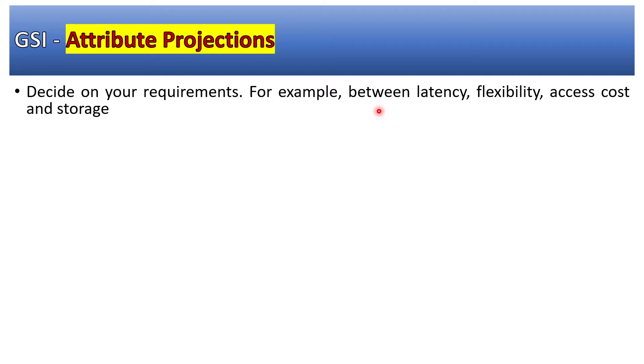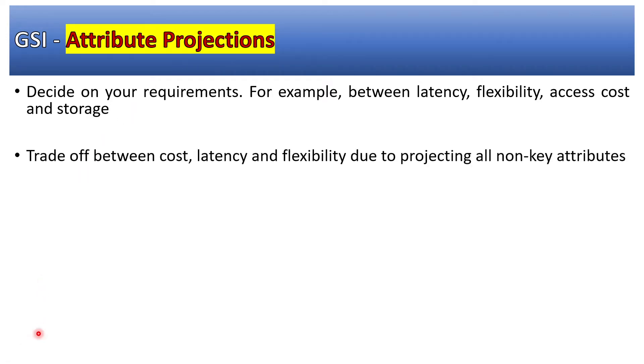In this video I am going to discuss GSI — Global Secondary Indexes — in more depth: how they can impact latency, cost, and other aspects of DynamoDB. Let us start by deciding on your requirements, because how much latency is acceptable in your application, flexibility, access cost, and storage all lead to the decision of how you want to project your attributes. There is a trade-off between cost, latency, and flexibility.